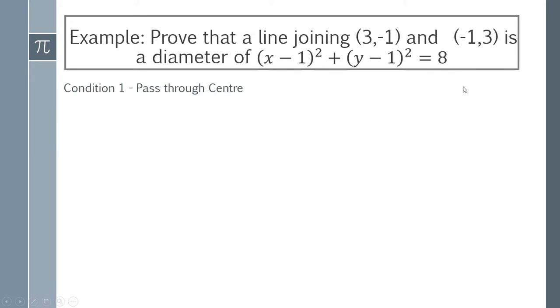So we start with our first condition. Condition one is that it has to pass through the center and we need to find the center of this circle. The way that you do that is you think about this bracket and you need to make this bracket become 0. We can do that by putting x equals 1. So that's one of our coordinates and then we need to make this bracket 0 and we can do that by making y equals 1. So that gives us a center with coordinates of (1,1) because 1 and 1 substituted into there is going to give you 0.